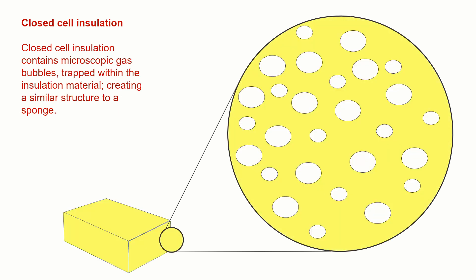The other type is closed cell insulation. This would be something like a sponge, but rather than water being able to flow through it, all the little bubbles within it are individual elements. They partition a piece of gas, and that gas cannot escape, and water or new gas cannot enter. So it's like a foam really — not like cheese, like I've actually drawn. It should look like a sponge. So this traps air within the material.